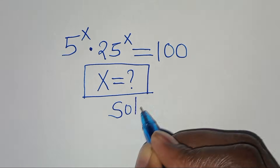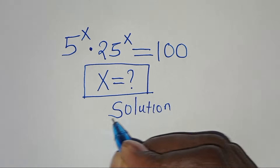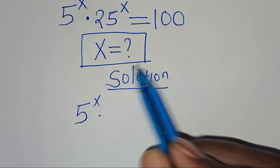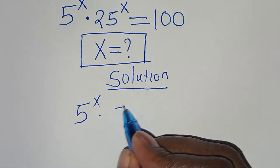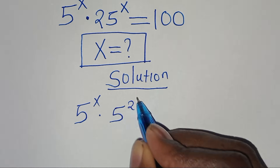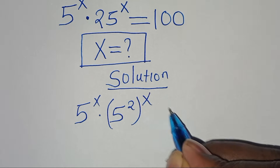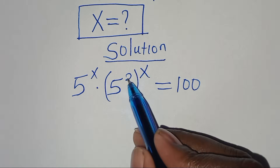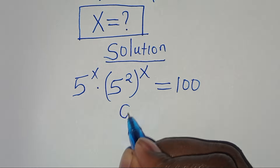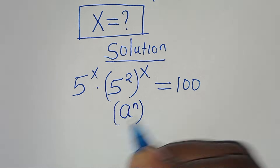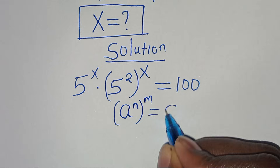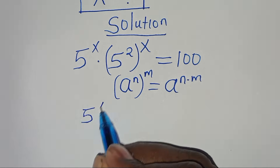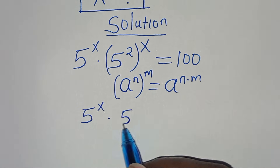Let's provide a solution. We have 5^x times 25^x. We can express 25 as 5² raised to the power of x, which equals 100. Using the rule (a^n)^m = a^(n×m), we get 5^x times 5^(2x).